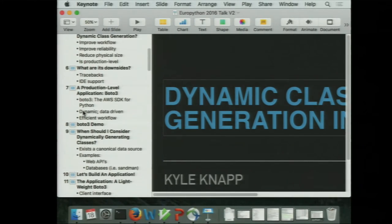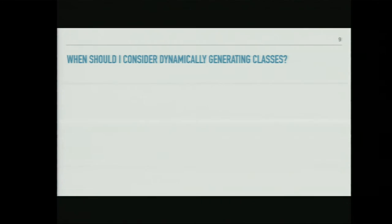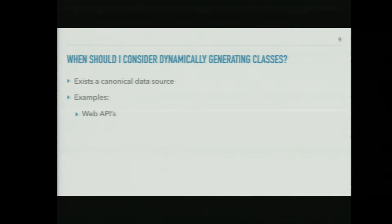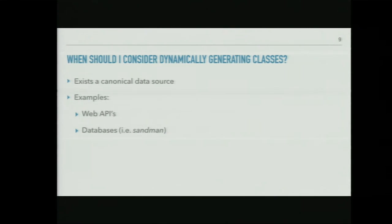When should you actually consider dynamically generating classes? The one big point is if there exists some canonical source of data where you can pull functionality from — and better yet, if there's more than one application possibly using that data source. A classic example is web APIs: you have to update a model to generate server code anyway, so using that for client code you get for free. Databases with a defined schema are another example — libraries like Sandman use that schema to create dynamic APIs to interact with databases.